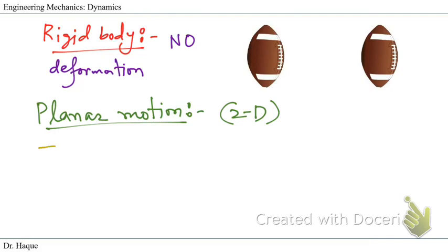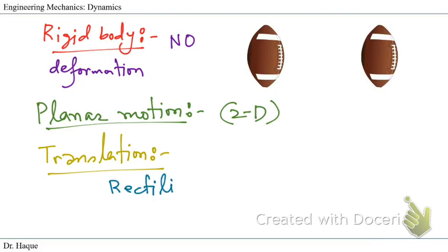The first type of planar motion is translation. Translation can be of two types: rectilinear translation and curvilinear translation — the same as we studied in Chapter 12 with rectilinear and curvilinear motion. Here, when we talk about planar motion, the first type is translation, and we can have two different sub-types: rectilinear translation and curvilinear translation.